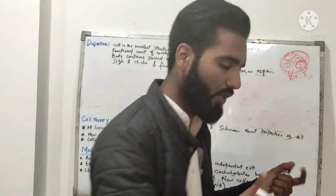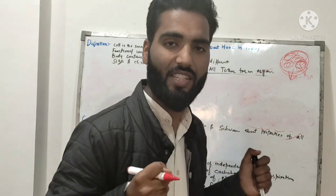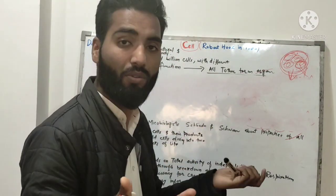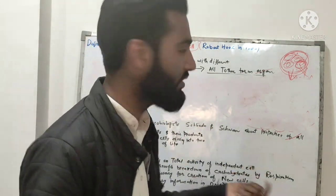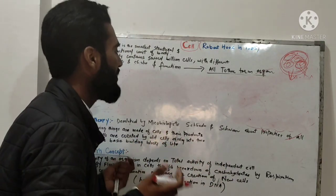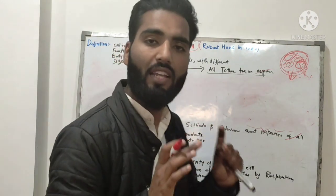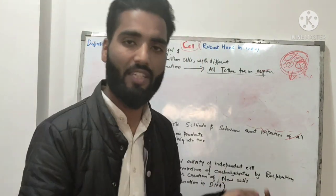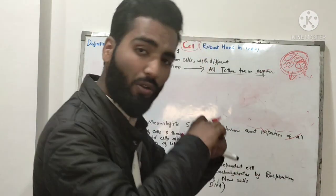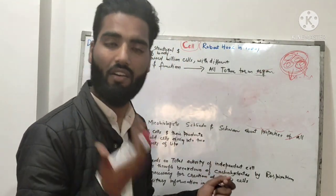The body is made of cells. The whole body is composed of cells — the body contains several types of cells. These cells have different sizes, different shapes, and different functions. All together, these cells form organs.